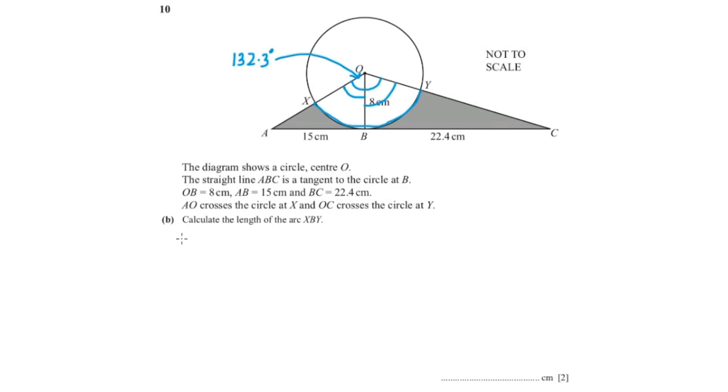So we could use the circumference formula which is 2 pi r multiplied with the fraction of the sector which is theta over 360. So 2 pi, our radius is 8. Our theta is 132.3 over 360. And when you put that into your calculator you should get an answer of 18.47 which I'm going to round to 3 significant figures which is 18.5 cm.